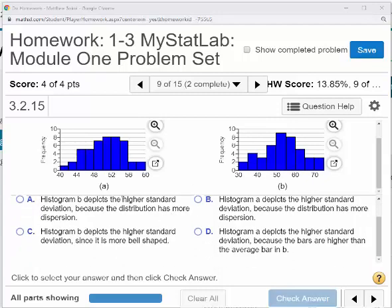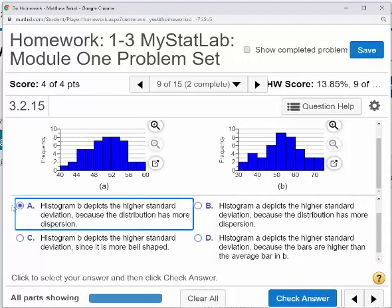So which one are you going to pick here? Well, you have to read through the answers and find out which one makes sense. So I just said here, histogram B depicts the higher standard deviation. All right, this is because the distribution has more dispersion, or the values are much larger along the horizontal axis. So let's see if that checks out.